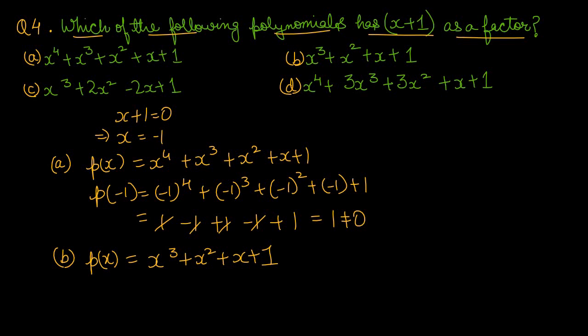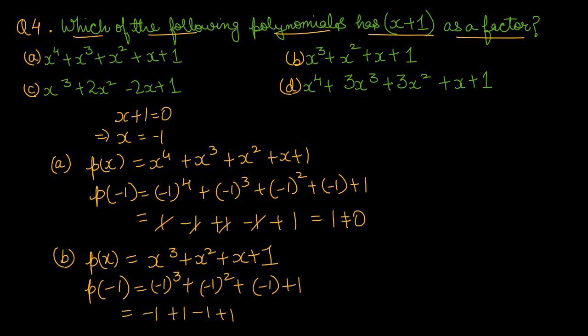अब option B में check करते हैं कि क्या x plus 1 इसका factor है। x को minus 1 fit करके देखते हैं — अगर answer 0 आया तो वो इसका factor है, अगर 0 नहीं आया तो factor नहीं है। Option B में: -1 + 1 - 1 + 1 = 0। जब हमने x = -1 fit किया option B में, polynomial का value 0 बन गया। So option number B is the right one.